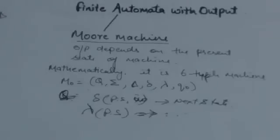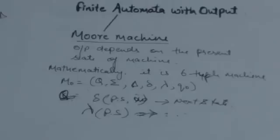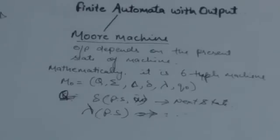Hello friends, welcome back to the tutorial. Our next topic is finite automata with output. Till now we have studied NFA and DFA. NFA and DFA, when they read any string of input symbols, they either reject it or accept it — they don't give any output.